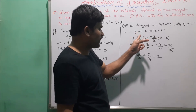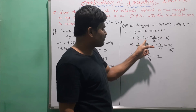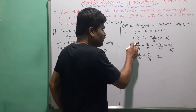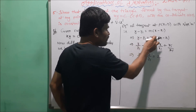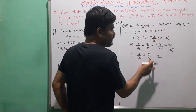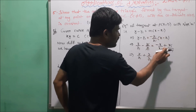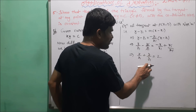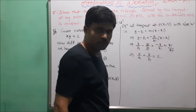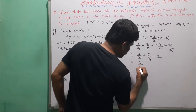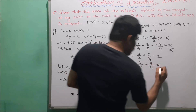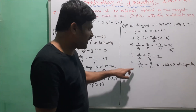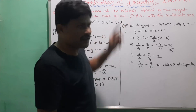The equation of tangent is x/x1 + y/y1 = 2. Dividing by 2: x/(2x1) + y/(2y1) = 1. This is the intercept form. From this, the x-intercept A = 2x1 and the y-intercept B = 2y1. This equation of tangent forms a triangle with the coordinate axes.